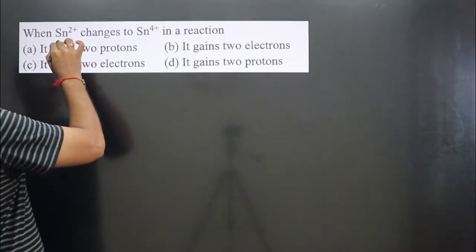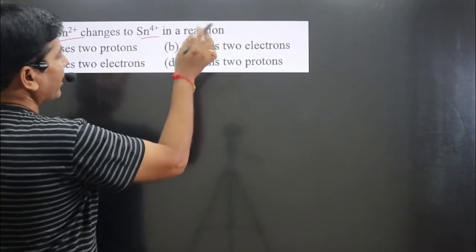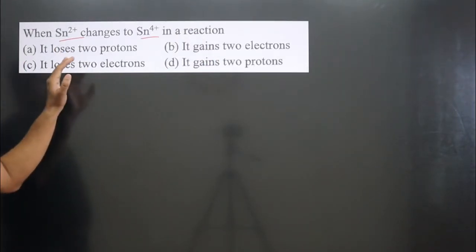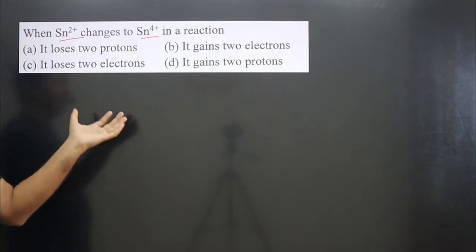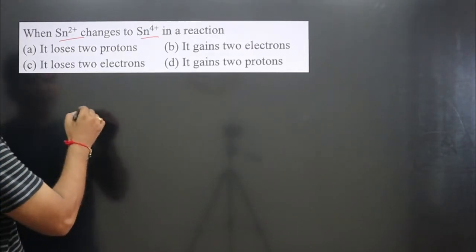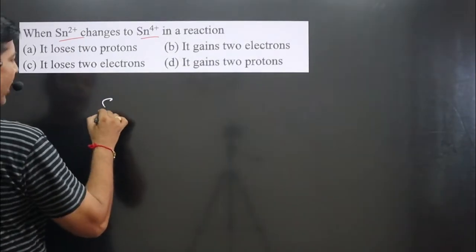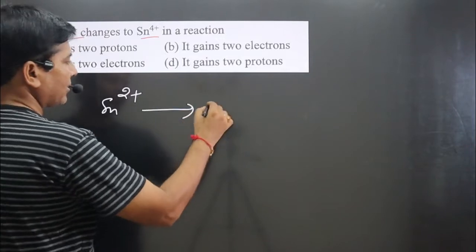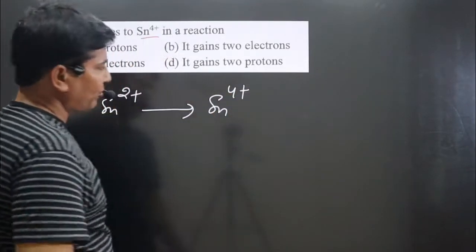The question says: when Sn²⁺ changes to Sn⁴⁺ in a chemical reaction, the options given are — it loses two protons, loses two electrons, gains two electrons, gains two protons. Which option is correct? First of all, we write down the equation: we have Sn²⁺ on one side and Sn⁴⁺ on the other side.